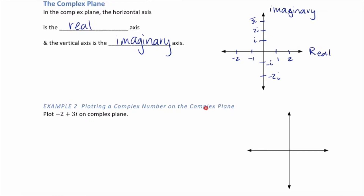Example 2: plotting a complex number on the complex plane. Plot negative 2 plus 3i on the complex plane. Let's start by labeling: on the real axis we have 1, 2, 3 and negatives to the left; on the imaginary axis we have i, 2i, 3i, negative i, negative 2i, negative 3i. To plot, start at the origin, go negative 2 on the real axis, then up 3 on the imaginary axis — so we went over negative 2 and up 3.